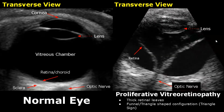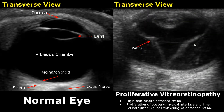In proliferative vitreoretinopathy, we will see thick retinal leaves and a triangle or funnel-shaped configuration is formed — this is termed the triangle sign. The detached retina will be rigid and non-mobile, due to proliferation of the posterior hyaloid interface and the retinal surface, which makes the retina thick, hardened, and unable to move around.